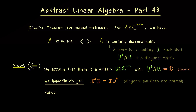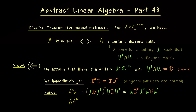This translates immediately to our matrix A because we have the relation A = U D U*. Let's calculate A* A: bringing U* and U to the right-hand side, A* A = (U D* U*)(U D U*). Since U is unitary, U* U = I, so the middle collapses and we get U D* D U*.